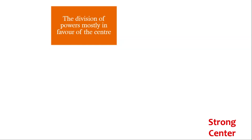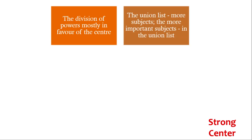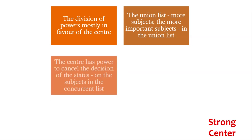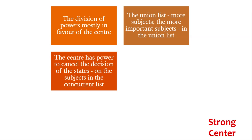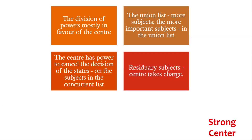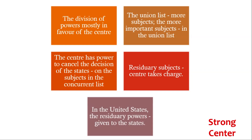The first feature is the Strong Centre. The division of powers made by the Constitution between the Centre and the States is mostly in favour of the Centre, and from the federal angle, it is highly unfair. The Union List contains more subjects than the State List, and the more important subjects have been included in the Union List. The Centre has the power to cancel the decision of the States on subjects in the concurrent list, and in matters of residuary subjects, the Centre will take charge. By all these, we can clearly see that the Centre is given more power than the States.